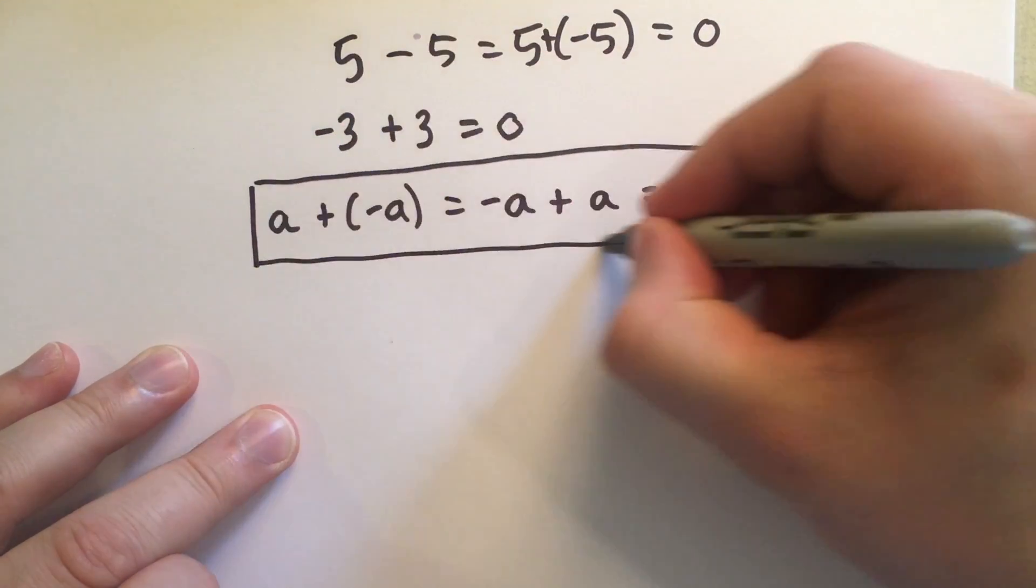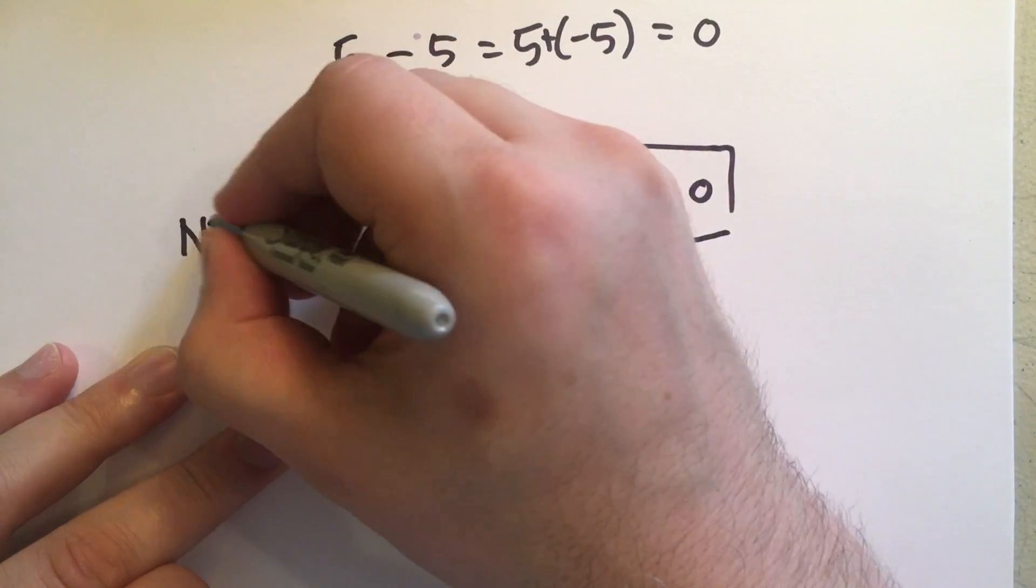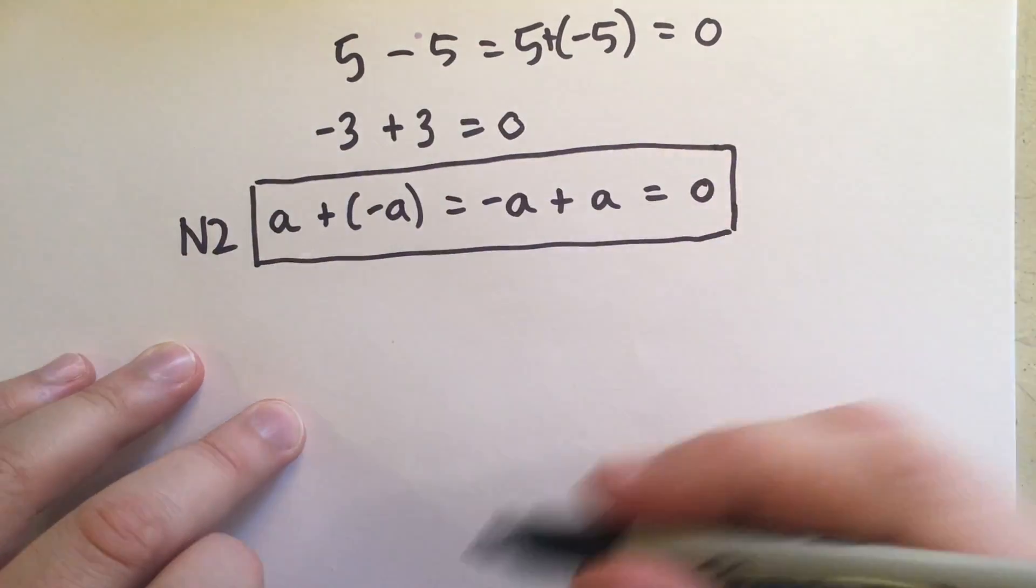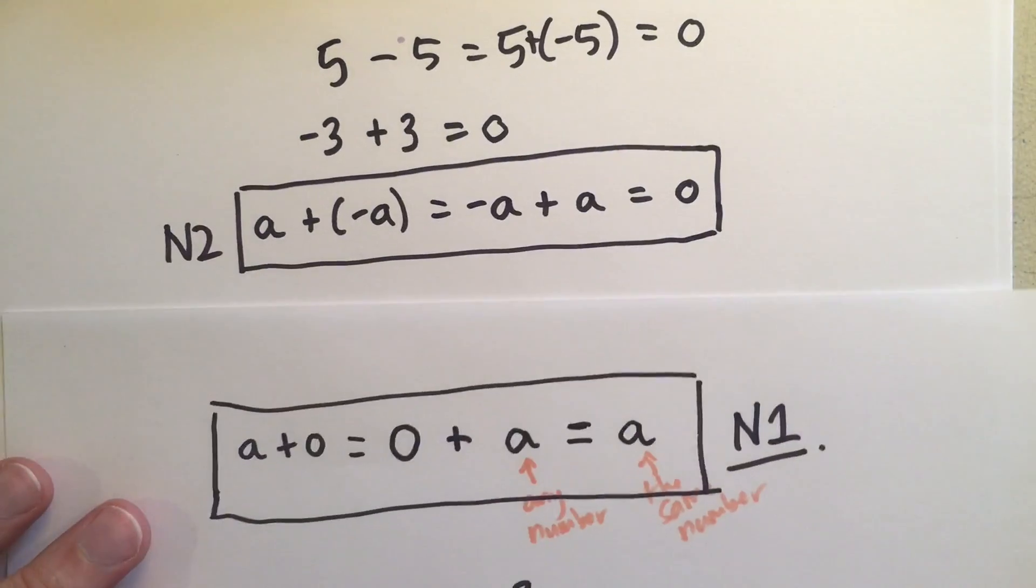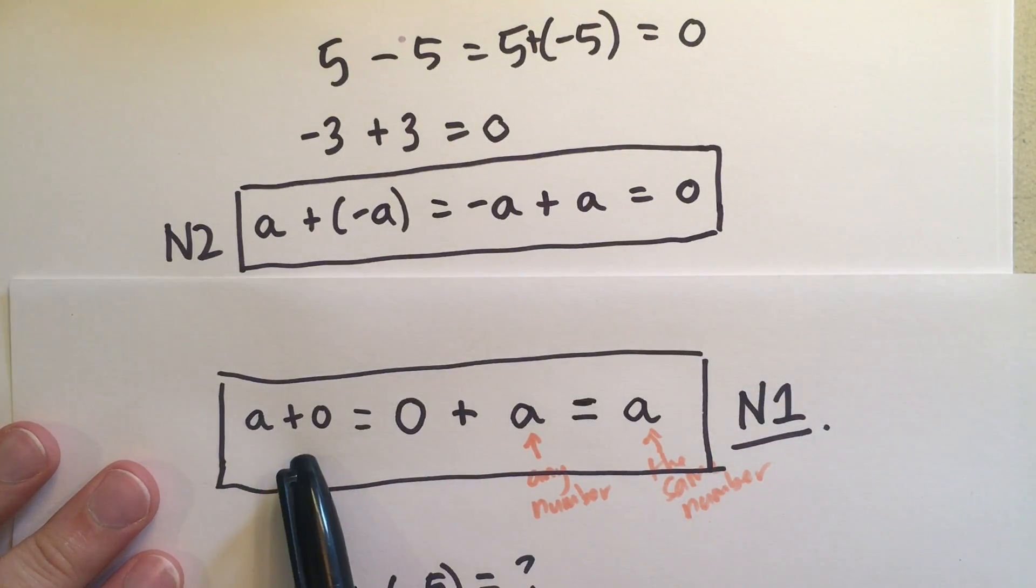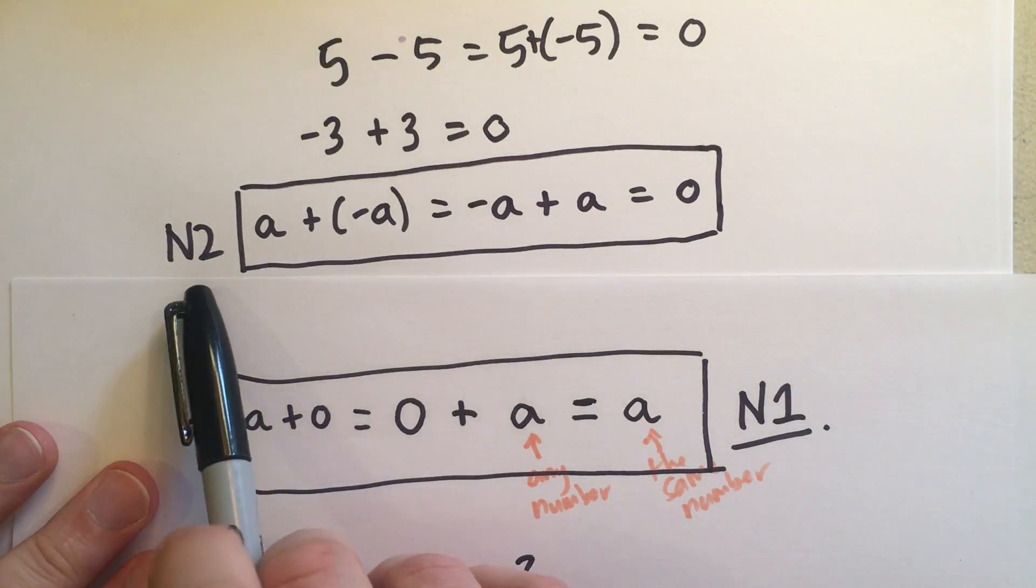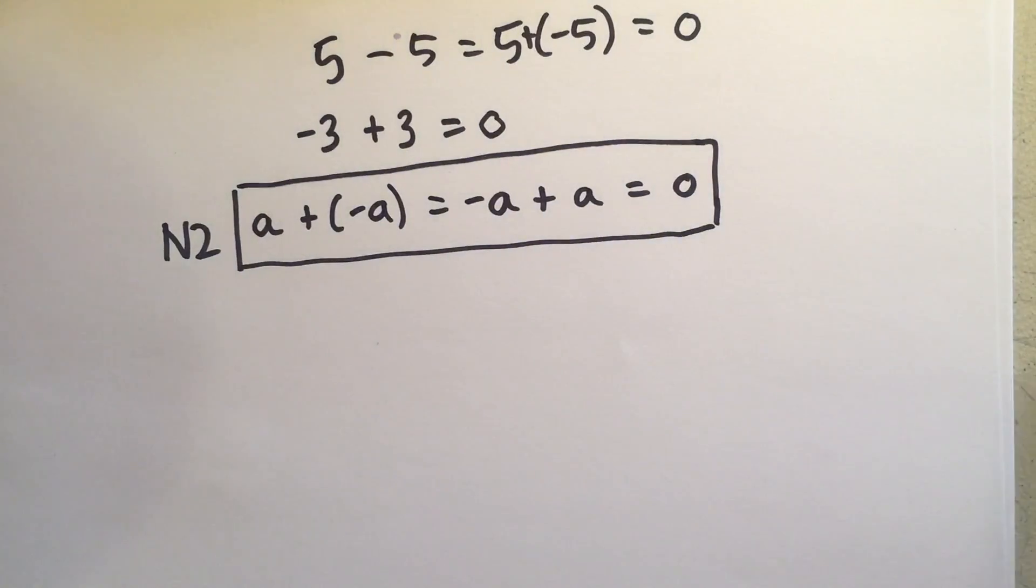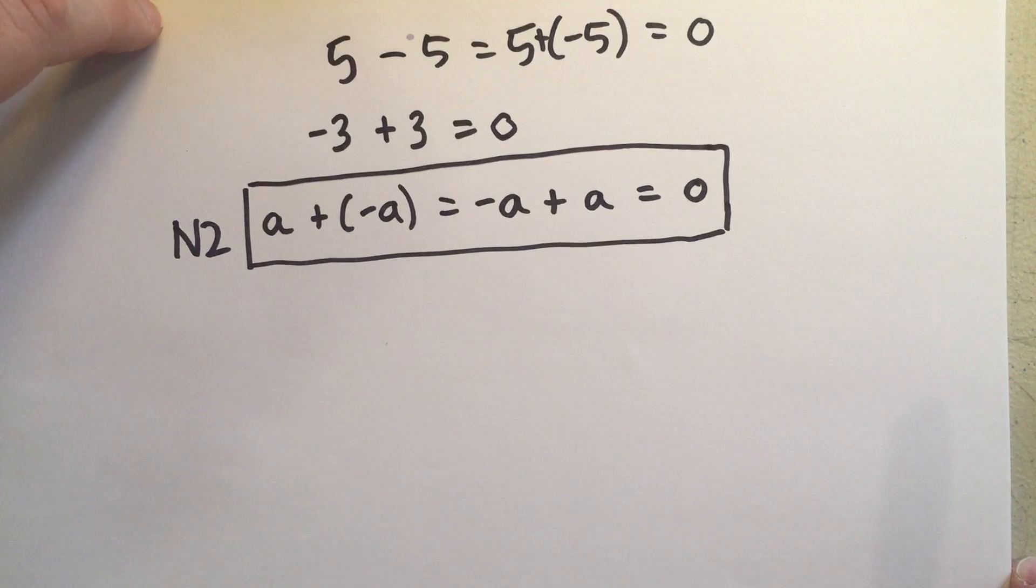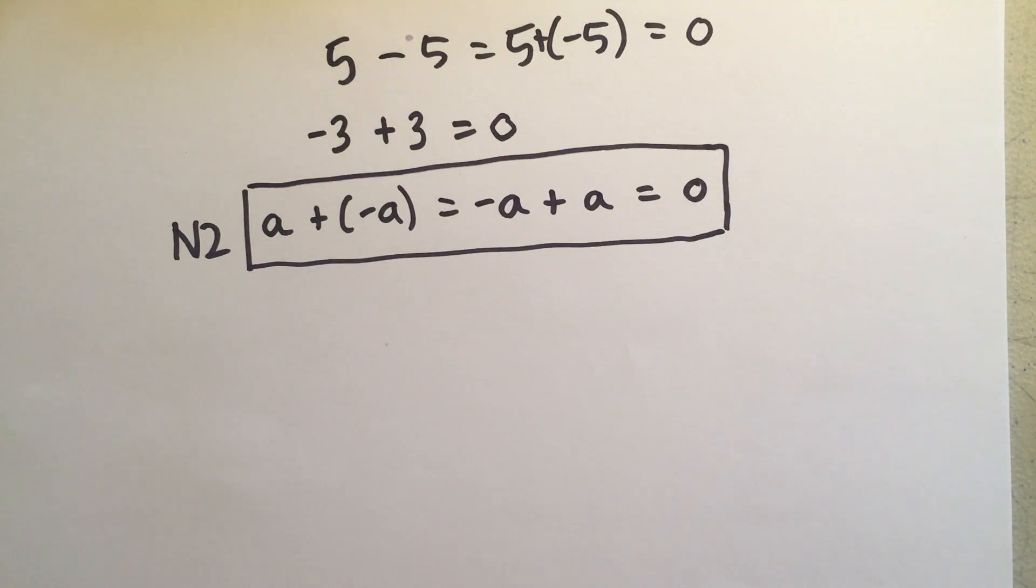and this is a very important property that we use all the time when we do math. So, just like in N1, we discovered that we can add 0 to any number, and in N2, we discovered that we can get to 0 from any number, positive or negative, by adding the inverse, the additive inverse, what we can call it.